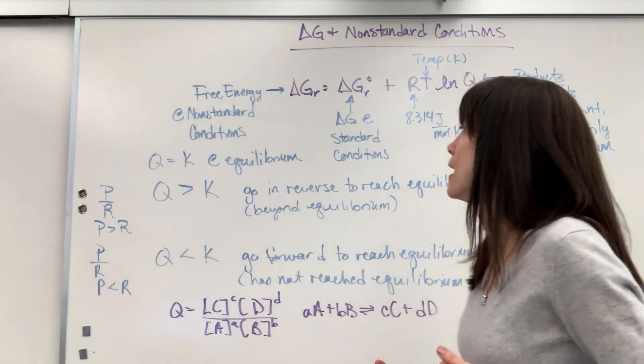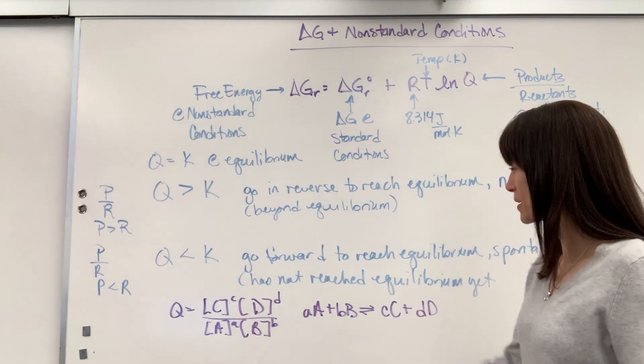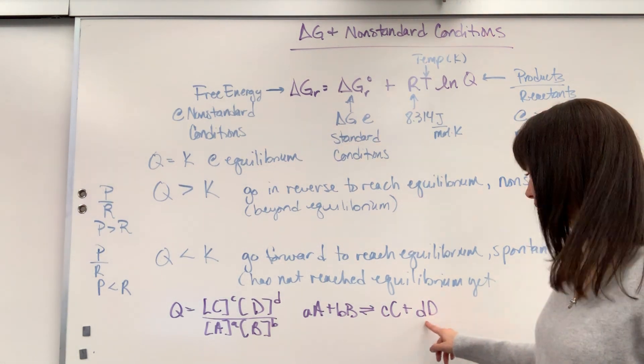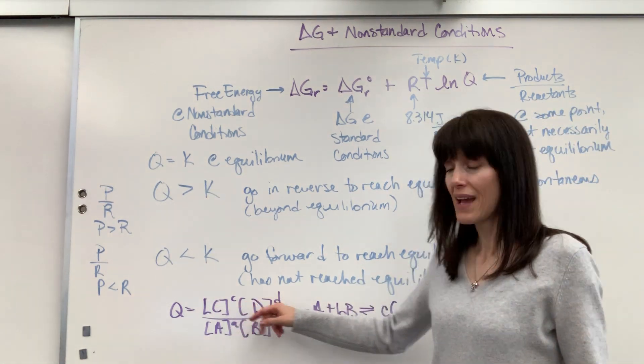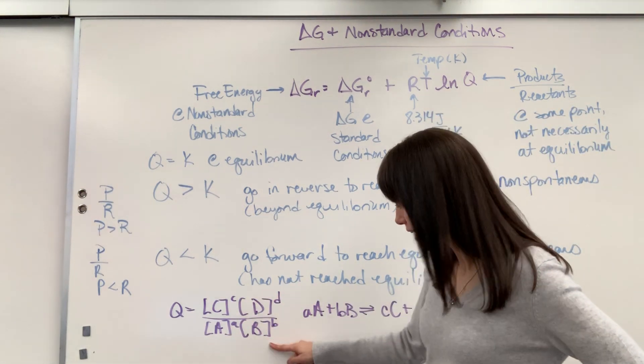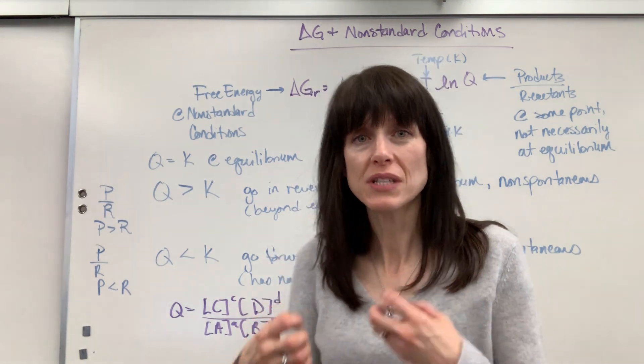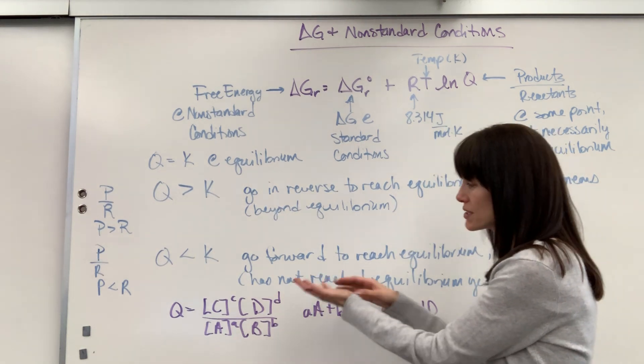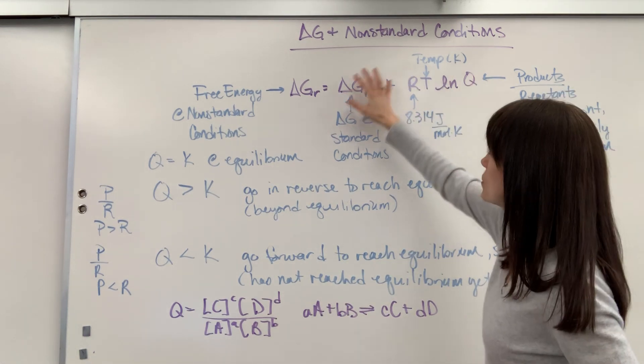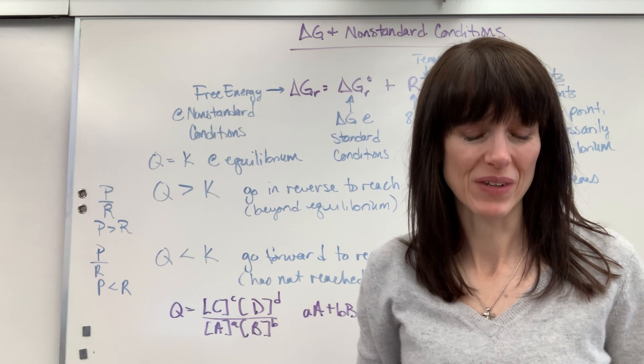Now, I did want to remind you, when you're finding Q, that's simply taking products over reactants. So I wrote down just our generic equation. Little A times big A plus little B times big B in equilibrium with little C times big C plus little D times big D. Now, notice products, C and D, and the coefficients little C little D become the exponents divided by reactants. And same thing, their coefficients become the exponents. So if you're given at some moment, you take the concentrations they give you and you plug it in just like you would K, the equilibrium expression. So you plug that in right there. And then, you can do all the math to see what the delta G value is. The amount of energy gives free energy at non-standard conditions.